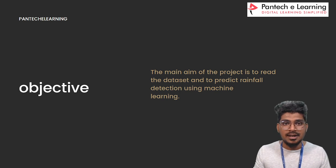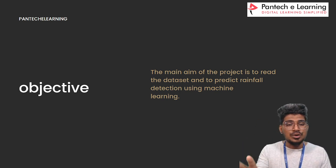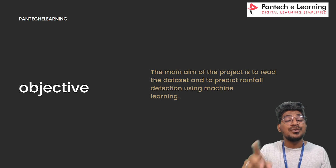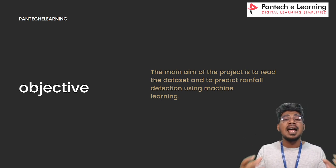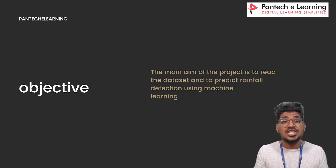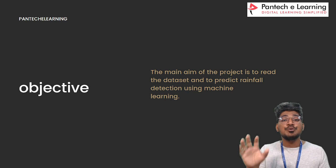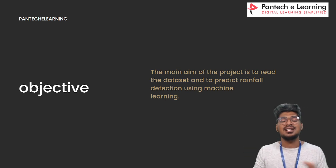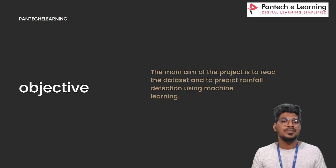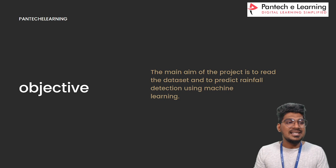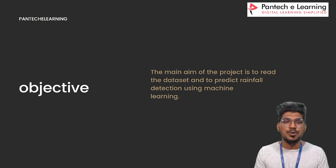What are we going to do today? We are going to create two different models using two different algorithms in machine learning. Based on the evaluation score, we can find which model is best. That is our main objective of today's target. Are you guys ready to learn? If you are, please mention it in the comment box. And if you really like the session, don't forget to hit the like button.